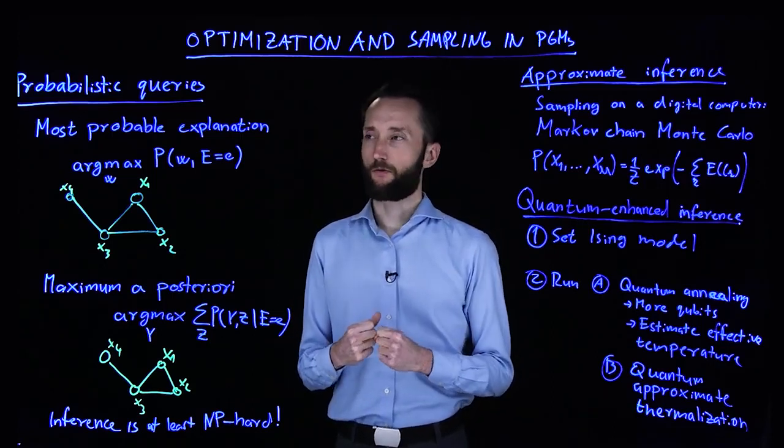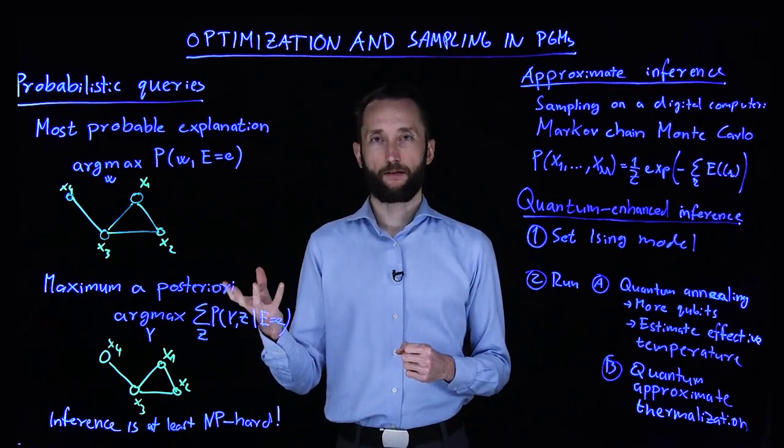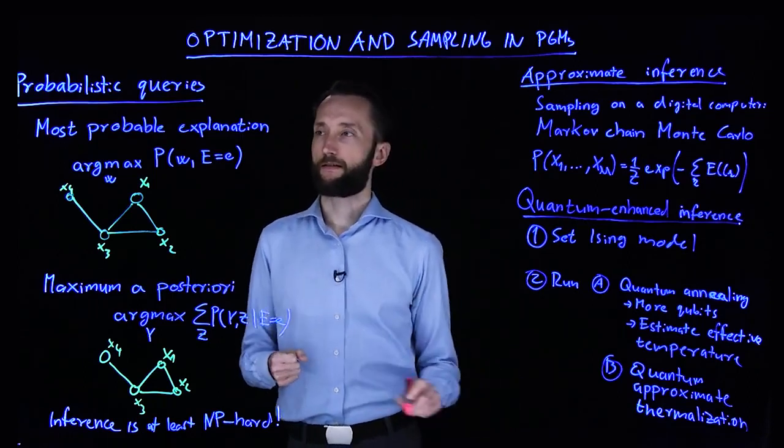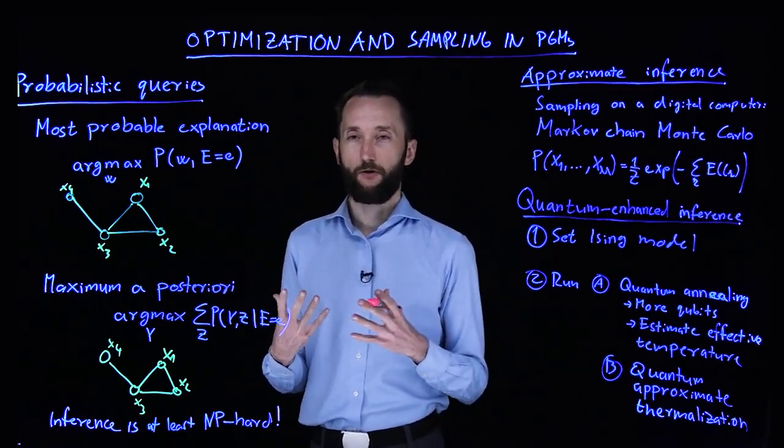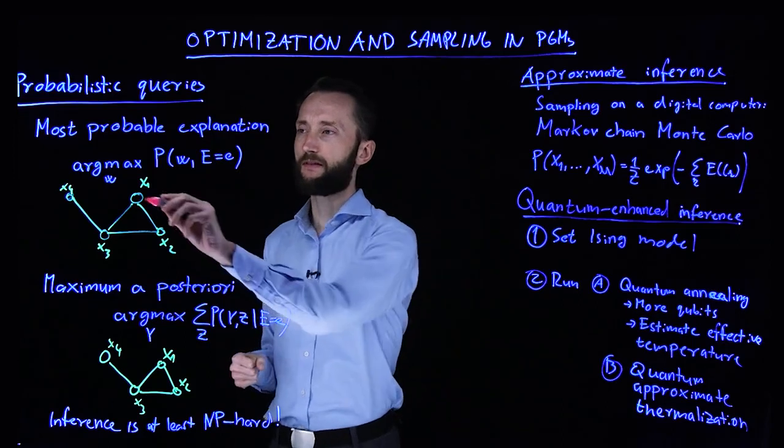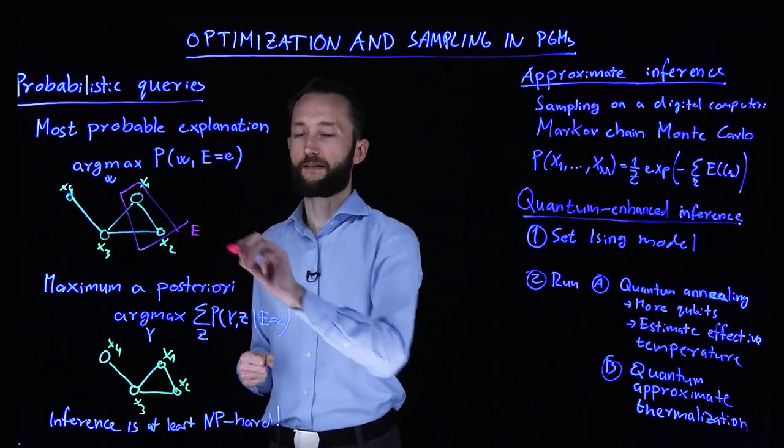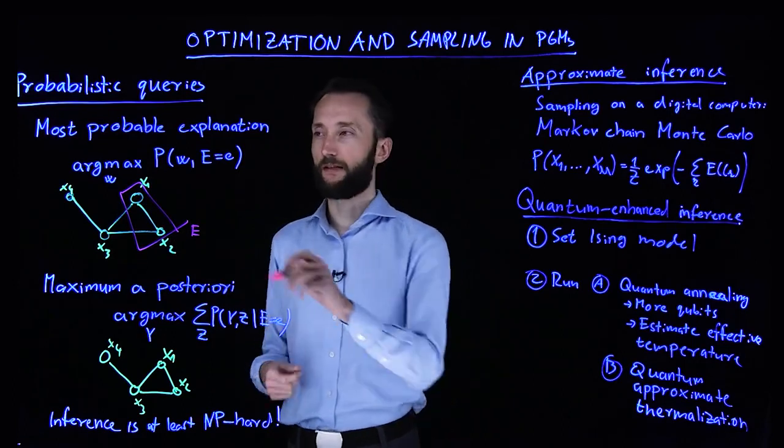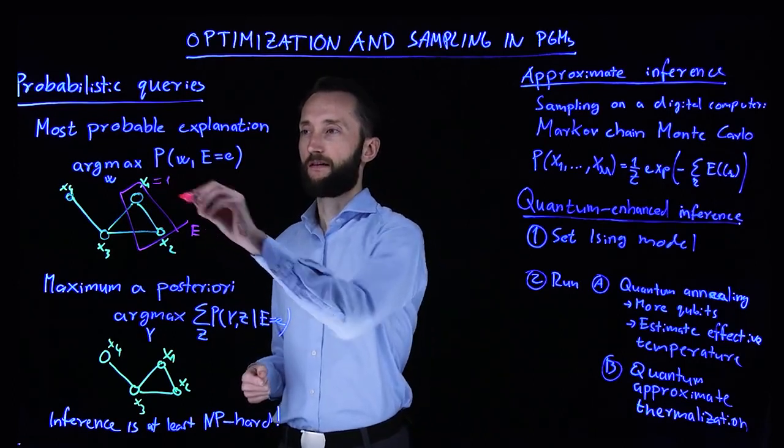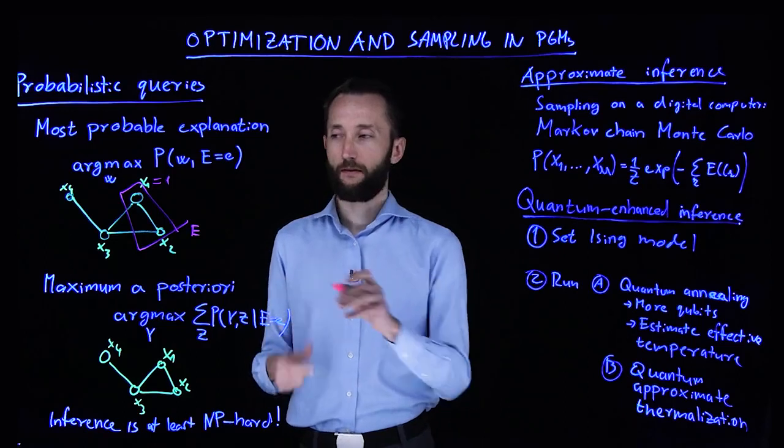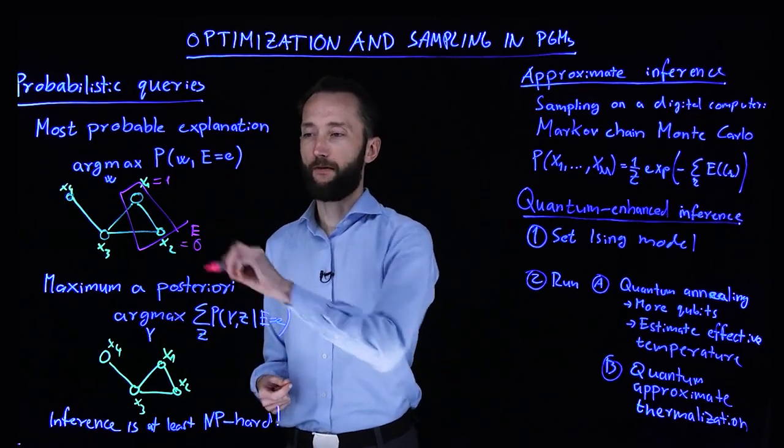The easiest query you can run is called the most probable explanation. In this case, you have some evidence. You observe some of your random variables. For instance, these two random variables consist of a set which belong to the evidence. For instance, this random variable takes the value 1 and this takes the value 0.